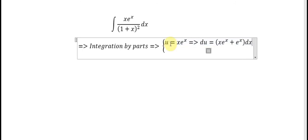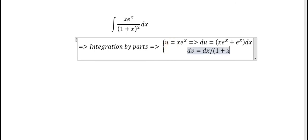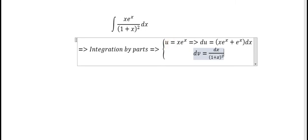dv is dx divided by (1+x)^2, later v is minus 1 divided by (1+x).